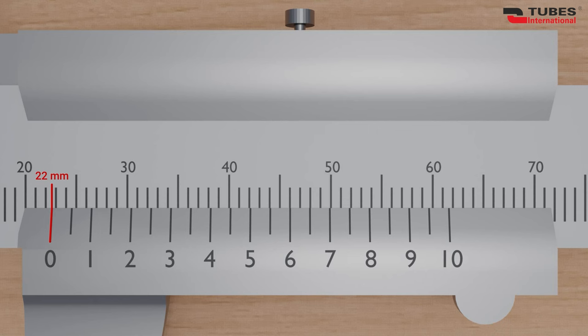Next, look at the vernier scale to read the fractional part of a millimeter. Check which lines align. We see that the lines align at this point, which means we have 0.6 millimeters. The sum of these two readings gives us an external diameter of 22.6 millimeters.